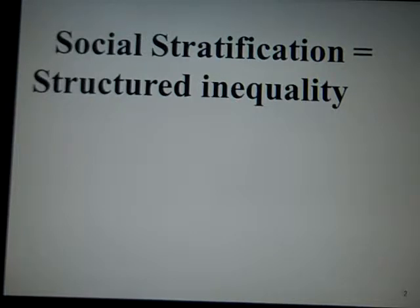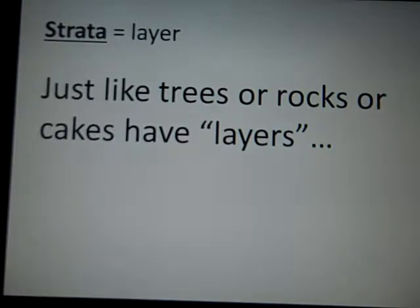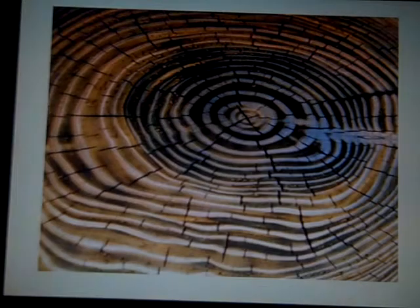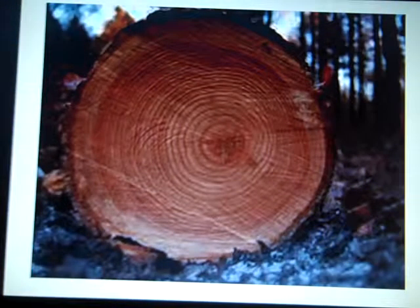Social stratification essentially is structured inequality. You'll hear me talk about this more in the PowerPoint video lectures soon. Society is essentially layered. When we talk about stratification, think of the word strata — strata literally translates to layer. Society has many different layers, and we can look at stratification in cities as well as in rural places. Society is layered just like trees, rocks, or cakes. You can see the different layers of this tree trunk.